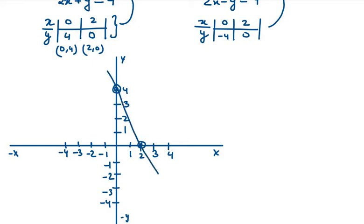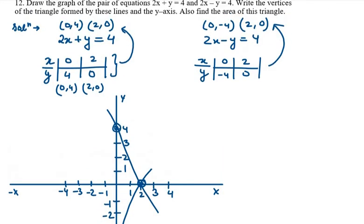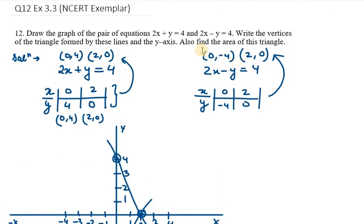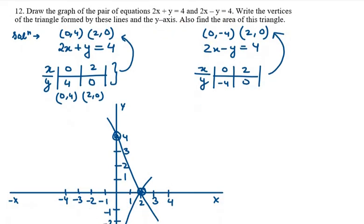Now the second equation is 0, minus 4. So 0, minus 4 lies on the y axis on the negative side, somewhere here. Then the second is 2, 0, which is the same as the first one. Now we need to join them. Let's read the question again. It says write the vertices of the triangle formed by these lines and the y axis, and find the area of the triangle.